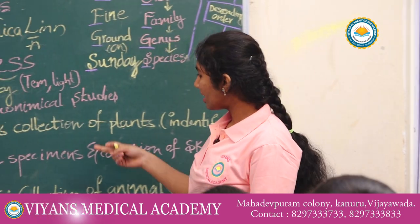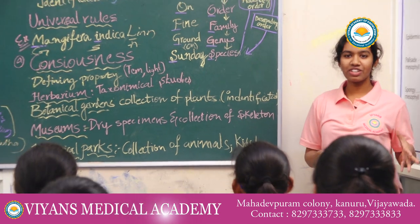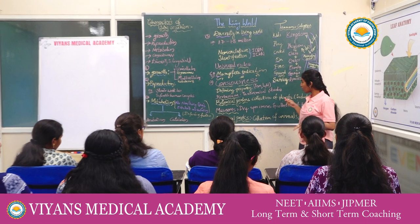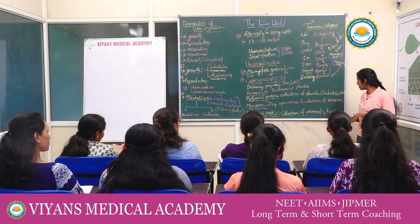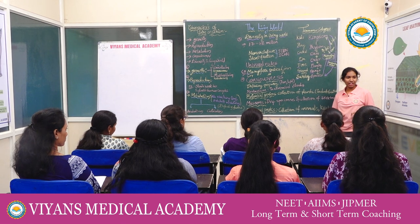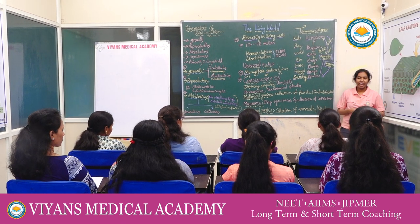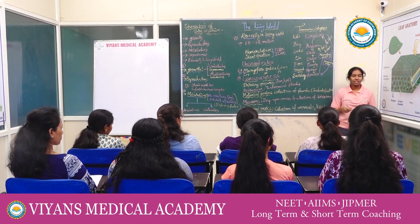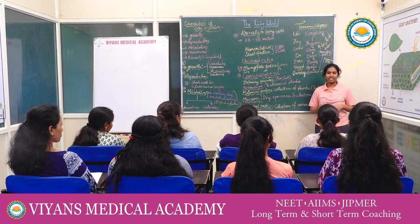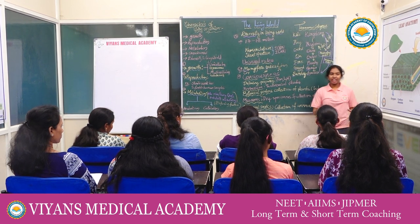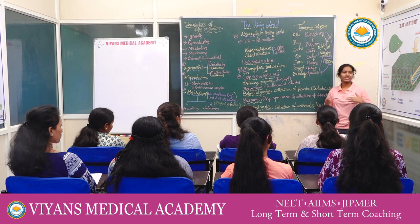Next, we move to botanical gardens. These are the places where collections of living plants are kept and grown for identification purposes. They carry the biological name, scientific name, family, and other details. The Royal Botanical Gardens is present at Kew in England, the Indian Botanical Garden is present in Howrah, and the National Botanical Research Institution is present in Lucknow.